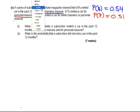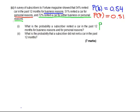Finally we are told that 72% rented a car for either business or personal reasons. So the probability of P or B is 0.72. So those are the three things or pieces of information we are given: probability of B, probability of P, and probability of P or B.